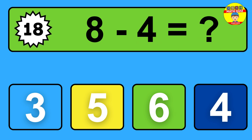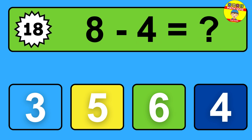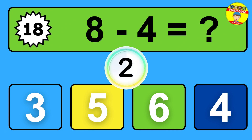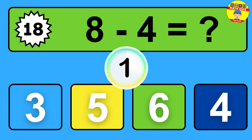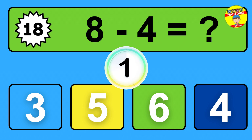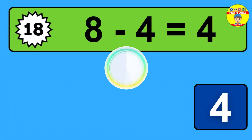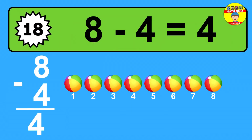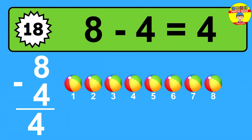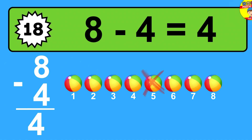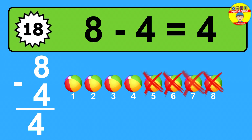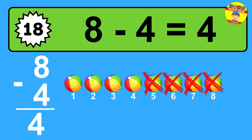Question eighteen: eight minus four equals what? The answer is eight minus four is four. Let's count it: one, two, three, four.